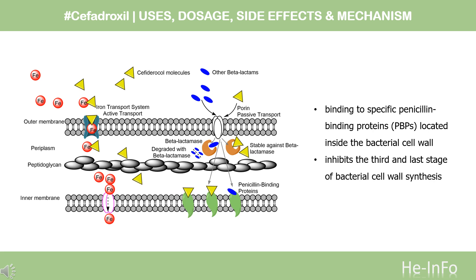Mechanism of Action. Like all beta-lactam antibiotics, cefadroxil binds to specific penicillin-binding proteins (PBPs) located inside the bacterial cell wall, causing inhibition of the third and final stage of bacterial cell wall synthesis. Cell lysis is then mediated by bacterial cell wall autolytic enzymes such as autolysins. It is possible that cefadroxil also interferes with an autolycin inhibitor.